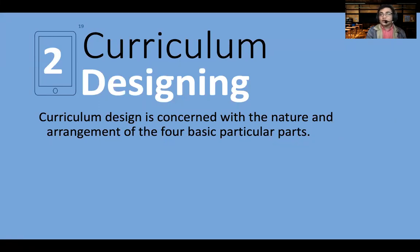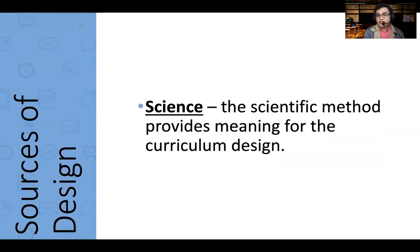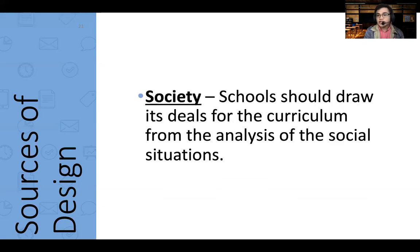Curriculum design is concerned with the nature and arrangement of four basic parts. First, the source of design should be science — it should use scientific method to provide meaning to why and how you design the curriculum. Second is society. A school should draw its ideals for the curriculum from an analysis of social situations, because the role of the school to society is very significant — it is training future generations.